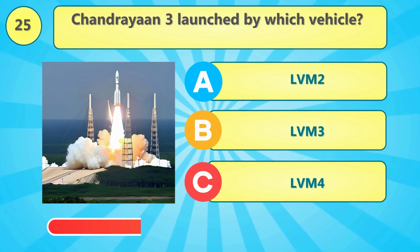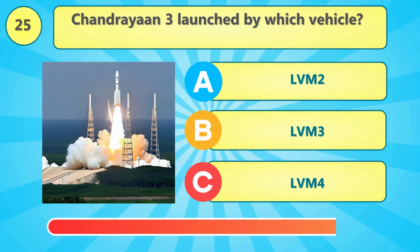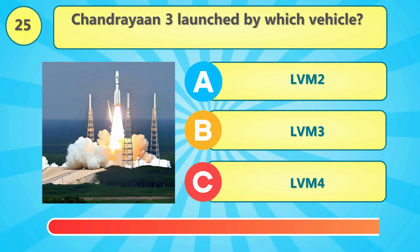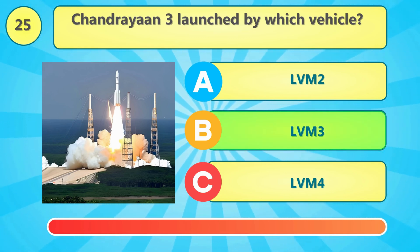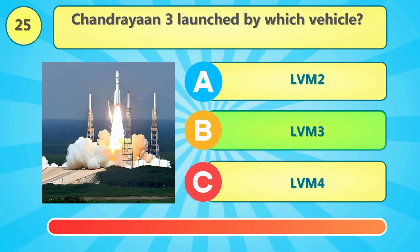Chandrayaan 3 was launched by which vehicle? The correct answer is option B.